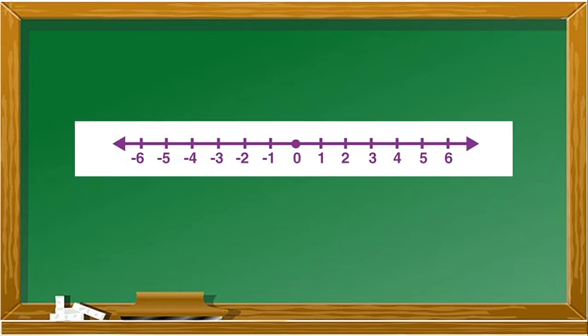Let's recall that the basic form of a mathematical graph is the number line. The arrows on both ends of the number line indicate that the line and the numbers extend infinitely in both directions.